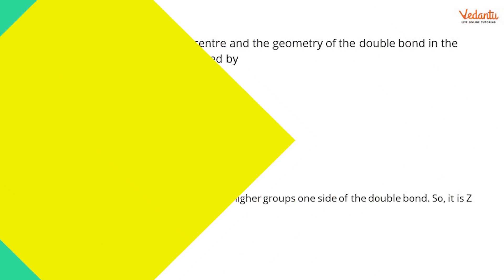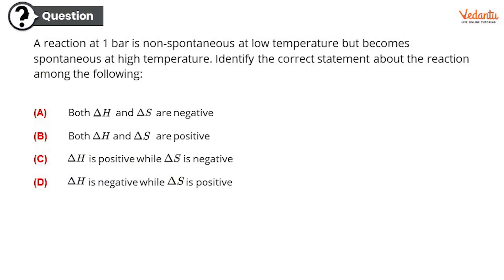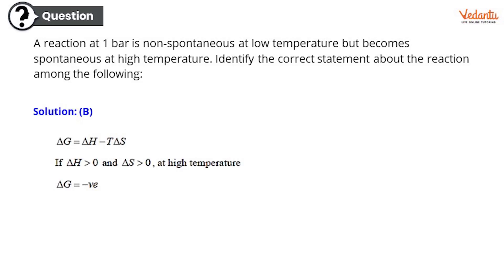So let's move on to the next question. A reaction at one bar is non-spontaneous at low temperature, but becomes spontaneous at high temperature. Identify the correct statement about the reaction among the following. First option, both delta H and delta S are negative. Second option, both delta H and delta S are positive. Third option, delta H is positive while delta S is negative. Fourth option, delta H is negative while delta S is positive. So the correct response is B, both delta H and delta S are positive. This is the solution. Delta G equals delta H minus T delta S. I guess you all must be knowing this equation. And this is the complete solution about this.